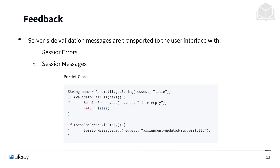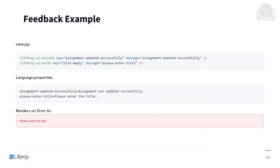Another thing we can do with our application is the implementation of feedback. Specifically, this feedback comes in the form of server-side validation messages which are transported to the user interface with session errors and session messages. You can see an example of that in the portlet class. In the view.jsp, we use the liferay-ui success tag for the success message and the liferay-ui error tag for the error message, as well as text in language.properties for the content of these messages. Finally, we see the render of that error message within the UI.